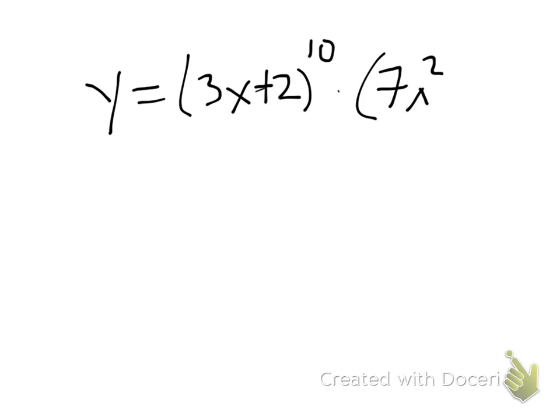So let's start with this one. This will be y equals 3x plus 2 to the 10th times 7x squared plus 3 all to the 5th.